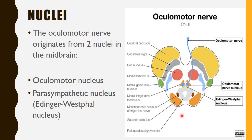There are two main nuclei of the oculomotor nerve located in the midbrain of the brain stem, at the level of the superior colliculus. The main motor nucleus lies ventral to the cerebral aqueduct, and from this nucleus the oculomotor nerve fibers emerge and run anteriorly between the crura into the interpeduncular fossa. Close to this main motor nucleus is the parasympathetic nucleus, called the Edinger-Westphal nucleus.